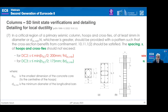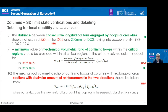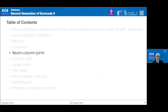For transverse reinforcement in critical regions of columns, new values are advanced for DC2, while for DC3 the values from DCM are maintained. For maximum distance between consecutive longitudinal bars engaged by hoops, the rule is kept for DC3 and new values are advanced for DC2. Similarly for the minimum mechanical volumetric ratio of confining hoops, new values for DC2 are introduced, and a clarification is provided for sections with similar reinforcement in both main directions — the minimum of both directions is adopted.